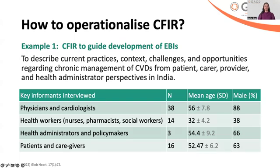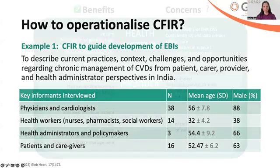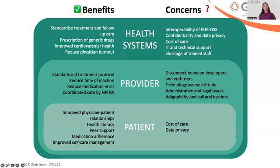We conducted key informant interviews with a range of stakeholders: 38 physicians and cardiologists, 14 health workers, 3 health administrators or policy makers, and 16 patients and their caregivers. From these qualitative interviews, we gathered valuable insights around the perceived barriers and facilitators around the development and implementation of a cardiovascular disease quality improvement strategy, which was targeted at multiple levels — patient, provider, and health system level — and these insights helped inform the development of the intervention.